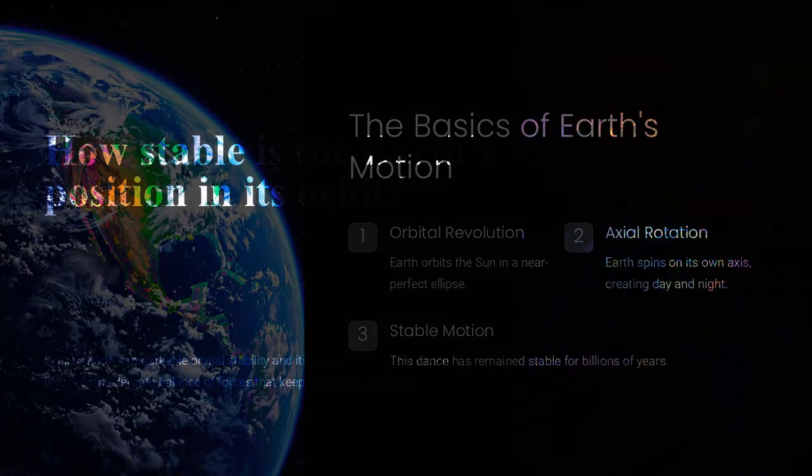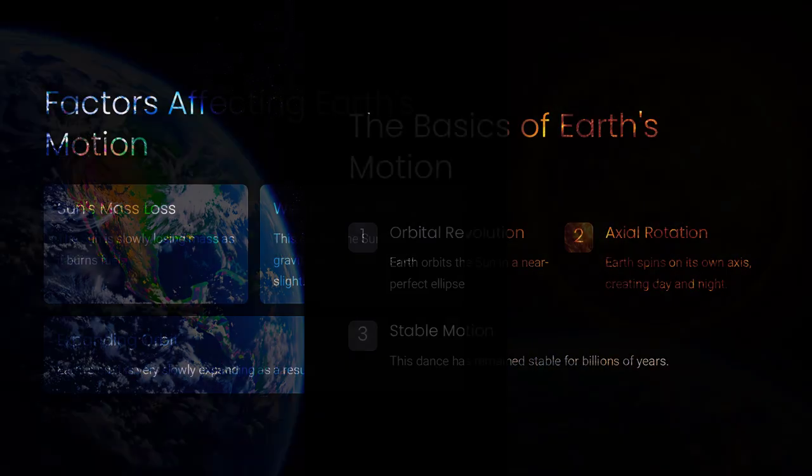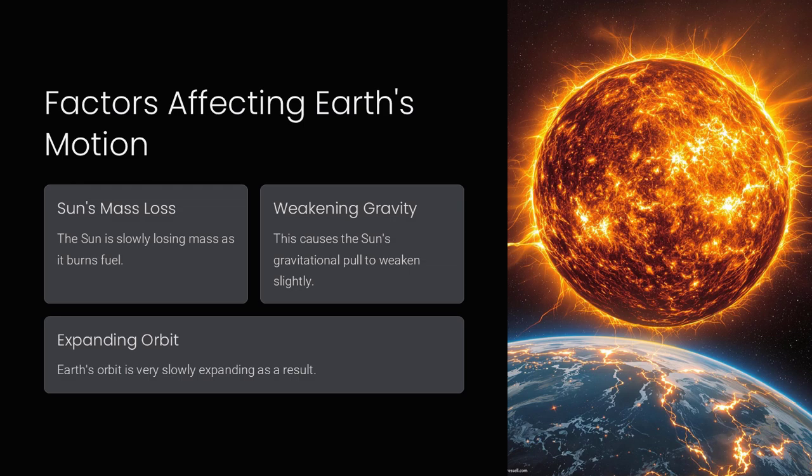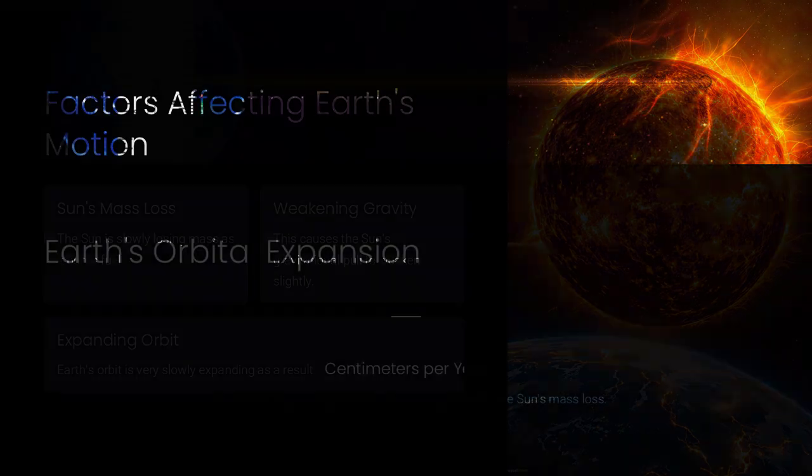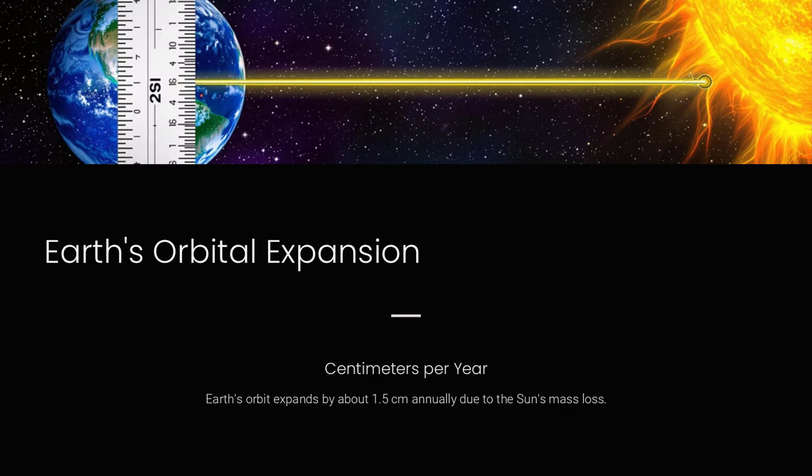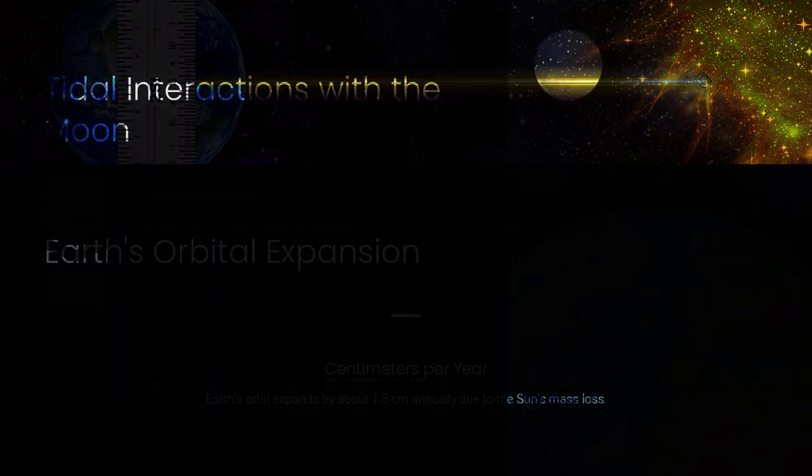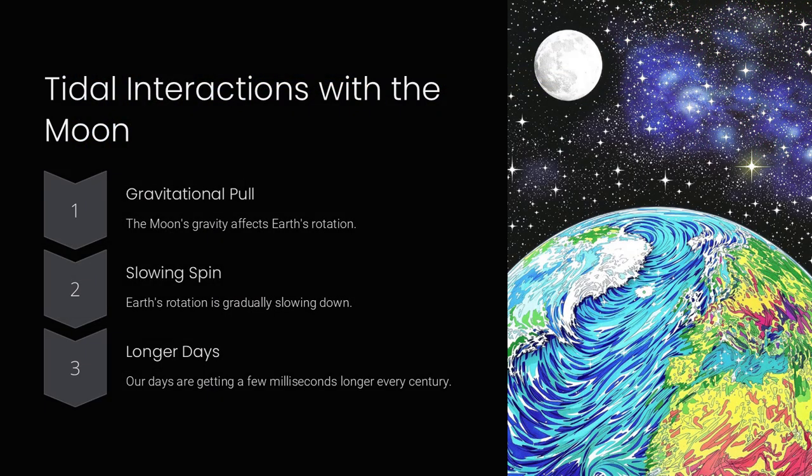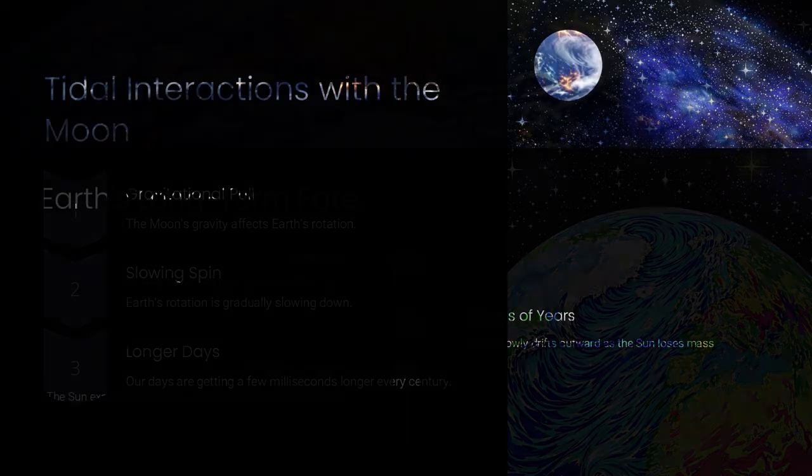In everyday life, we take for granted that Earth orbits the sun in a near-perfect ellipse while also spinning on its own axis. But have you ever wondered why this motion remains so stable over billions of years? And will it last forever? Or is Earth slowly drifting toward a different fate?